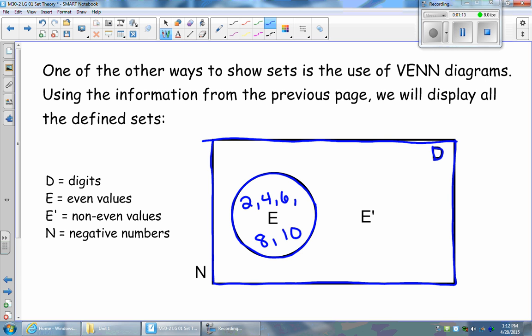Now, our E prime or the complement of E are our non-even values. So our non-even values are going to be the leftover digits once our even values have been removed.